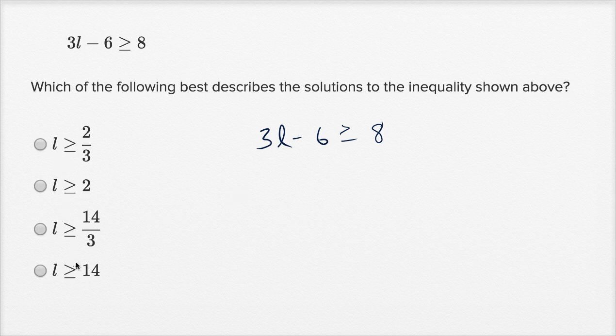Well, all of these choices are in terms of L. They've said L on one side and is greater than or equal to, actually all of these choices are greater than or equal to something else. So let's see what we can do to get just an L on the left-hand side. The first thing we might want to do is let's get rid of this subtracting a six, and the best way we can do that is we can add six.